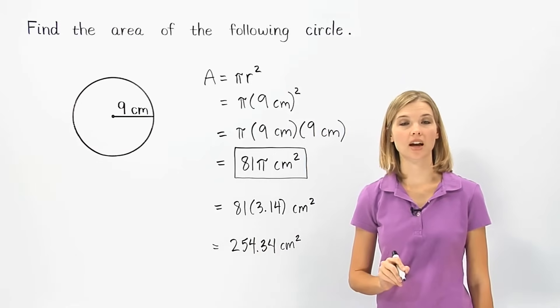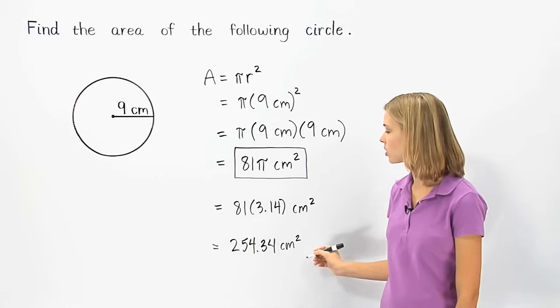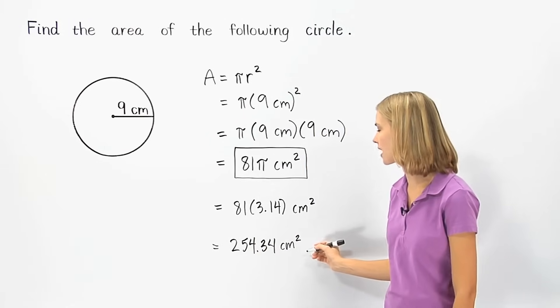So another way to write the area of the circle shown is 254.34 square centimeters.